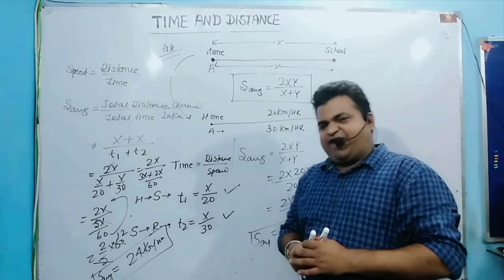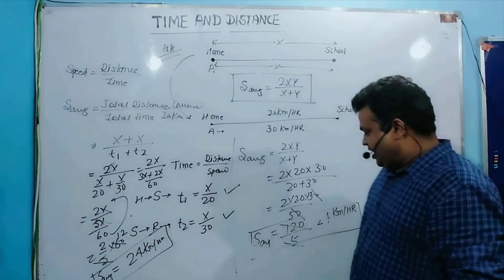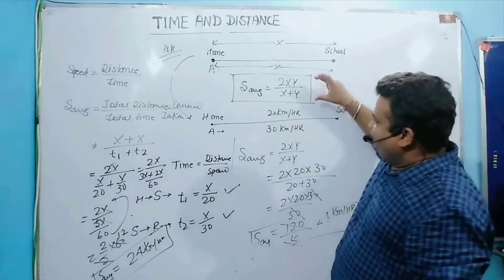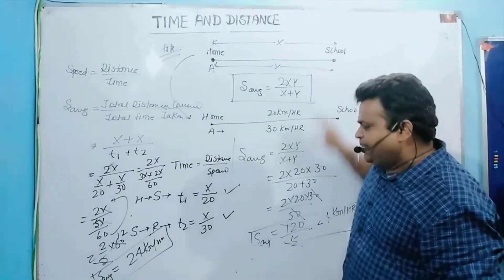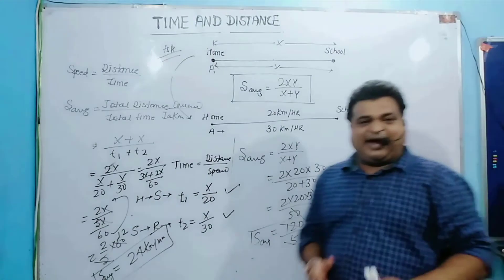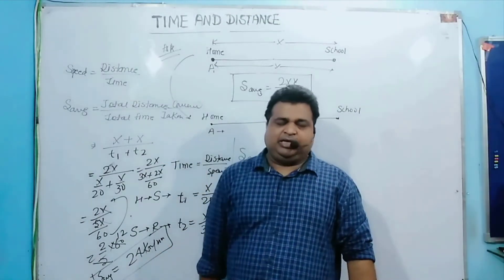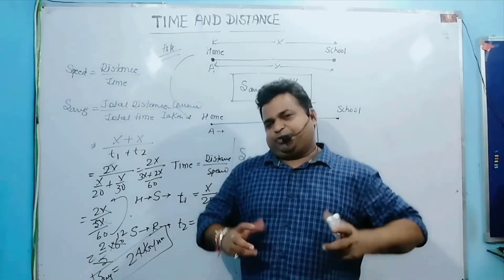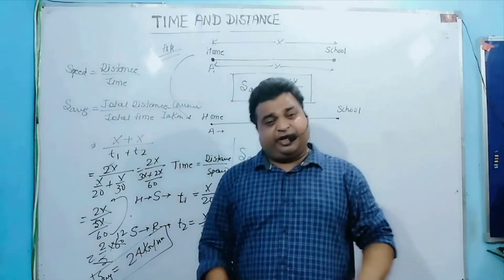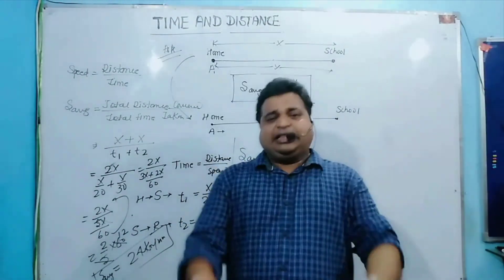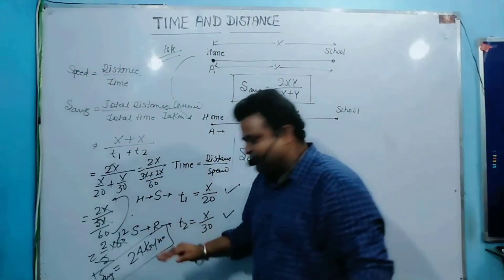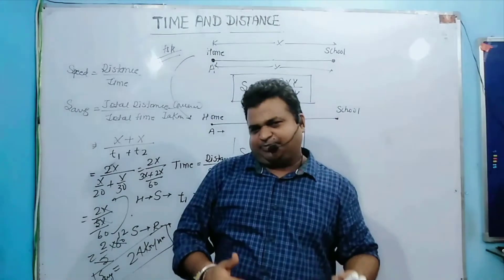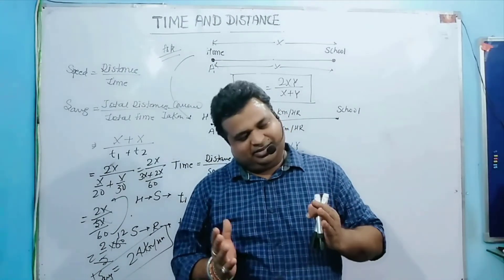Yes, the same value — 24 km per hour — which I already calculated using the shortcut formula 2xy divided by x plus y. Both methods give you the same result. But the conventional method requires more calculation: you calculate T1 and T2 separately, then substitute. With the shortcut, you simply remember 2xy divided by x plus y and get the same result instantly.